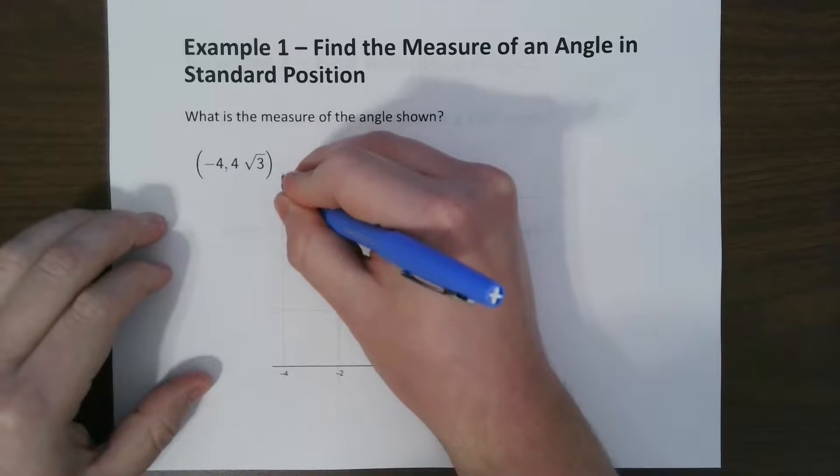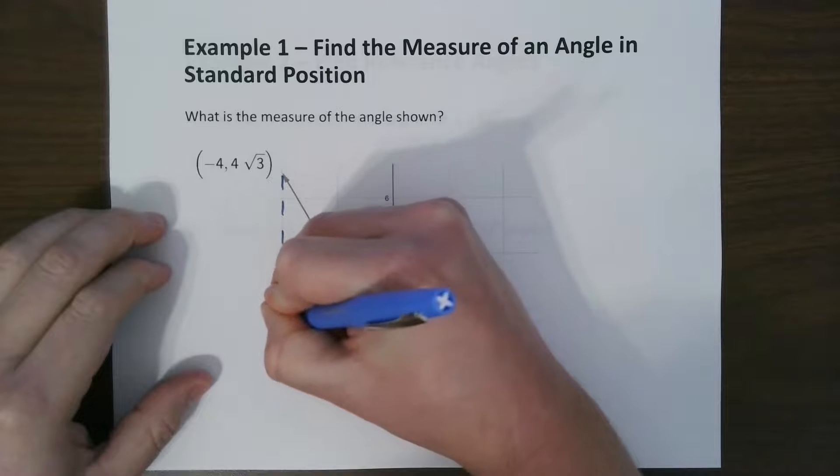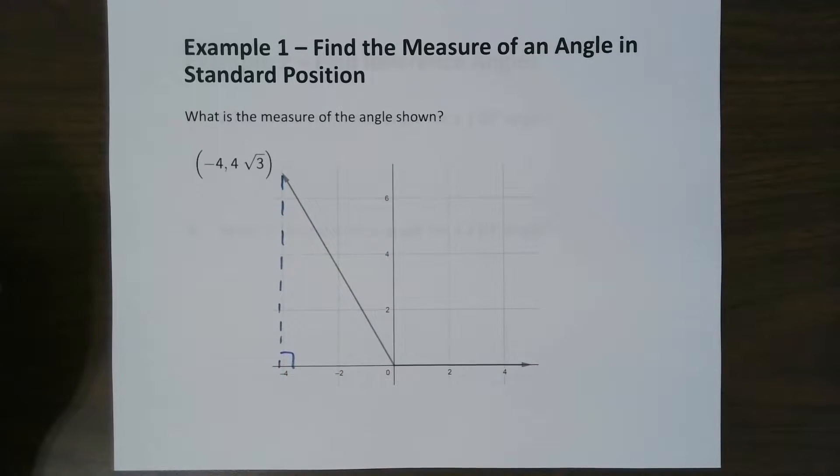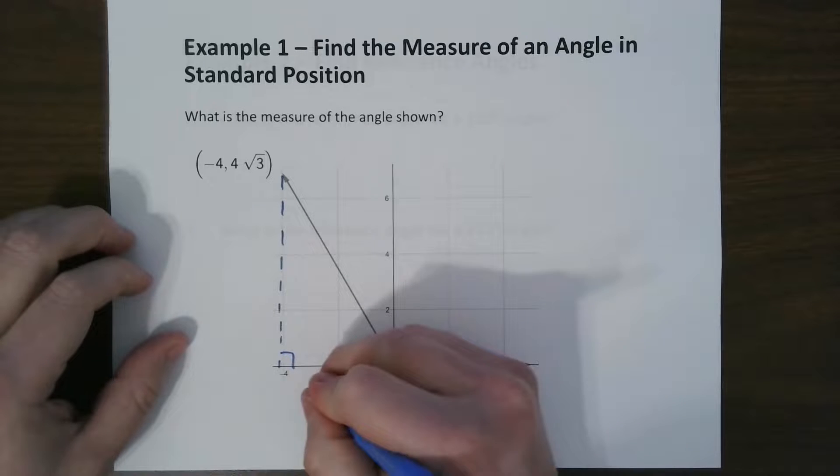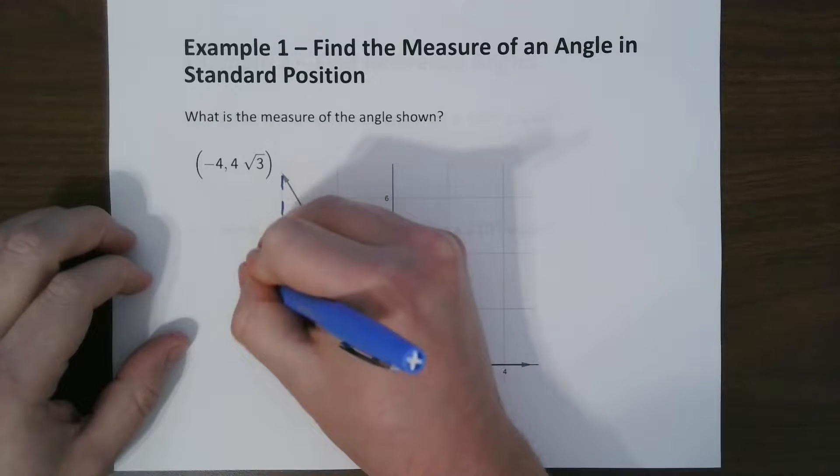So if we draw the triangle, we draw a line straight from there, we end up making a right triangle here. And we know this distance here is negative 4, and we know this is 4 radical 3.